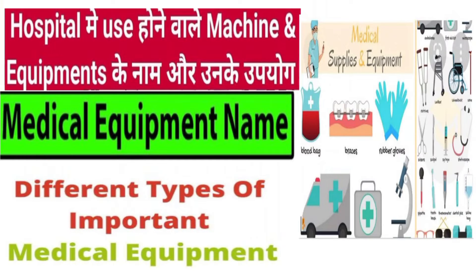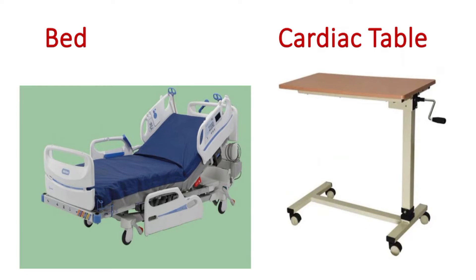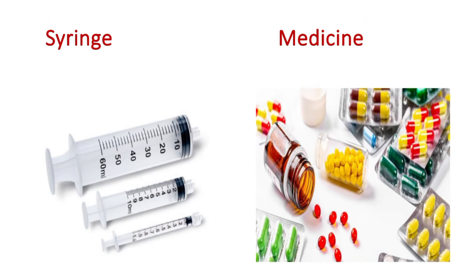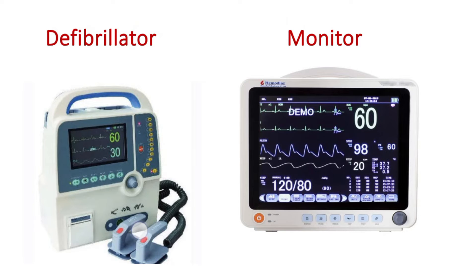So basically, to equipment the patient care, first is this cardiac table. Next is syringe. This is the medicines. This is the defibrillator.